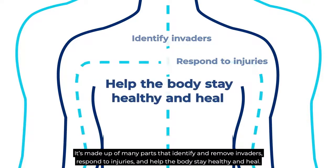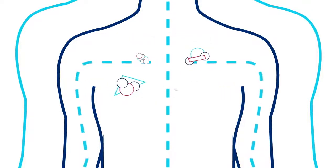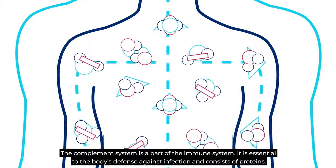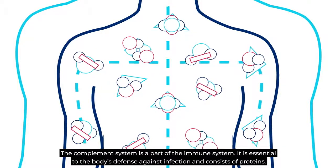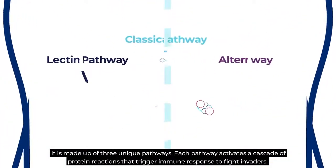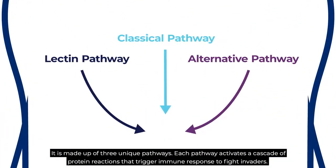The complement system is a part of the immune system. It is essential to the body's defense against infection and consists of proteins. It is made up of three unique pathways, each pathway activates a cascade of protein reactions that trigger immune response to fight invaders.